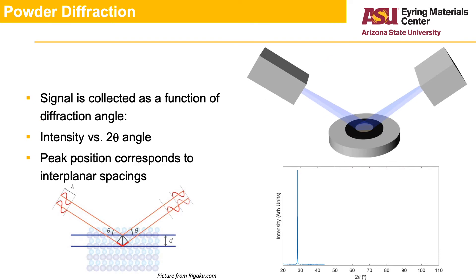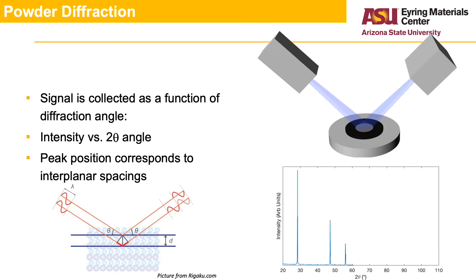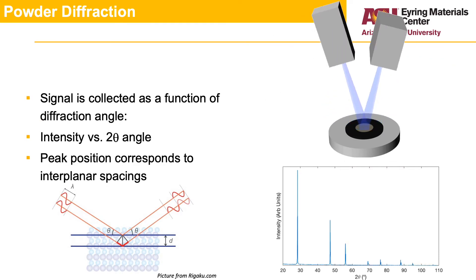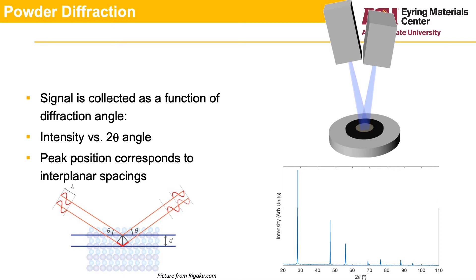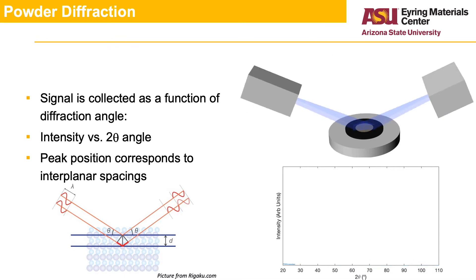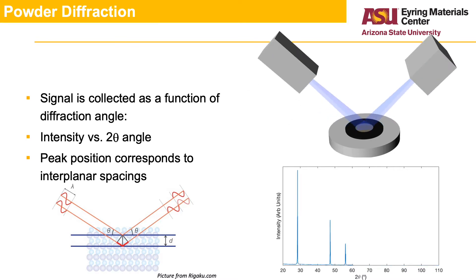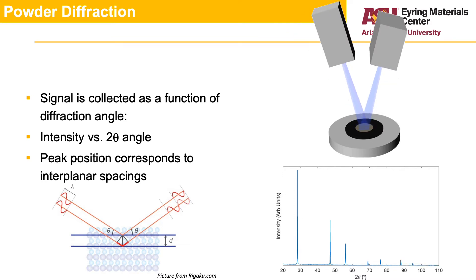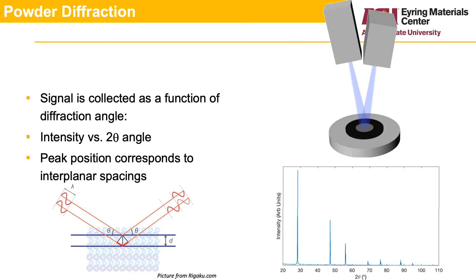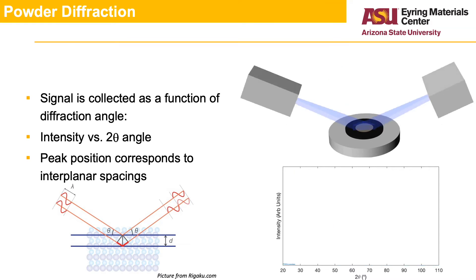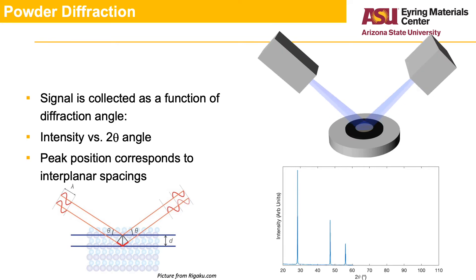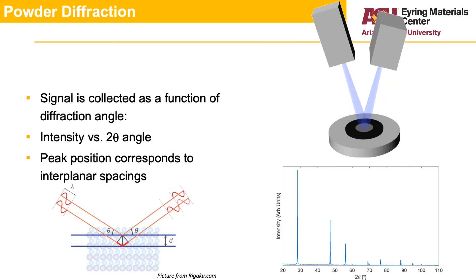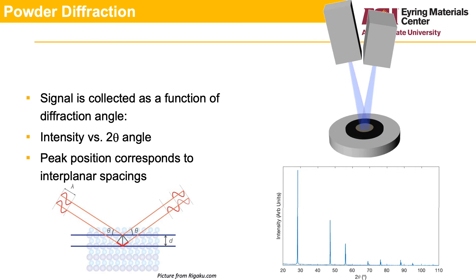In a powder diffraction experiment, the signal is collected as a function of 2-theta angle, while the sample is illuminated with nominally monochromatic X-rays. The peaks observed correspond to specific d-spacings from specific crystal orientations. The plot of intensity as a function of 2-theta can then be used to determine the material present and the lattice and structure of the material.